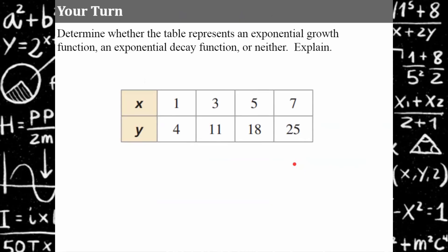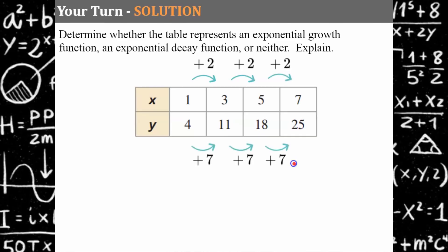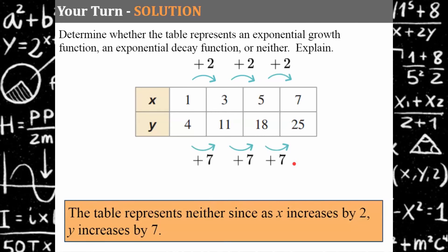Here's another one — please pause and come back when you're ready. Welcome back. As x is increasing by 2, y is increasing by 7. This table represents neither. This is actually a linear function because as x is increasing by 2, y is increasing by a constant rate of 7 — not by a factor, but a constant rate.